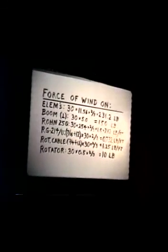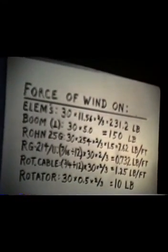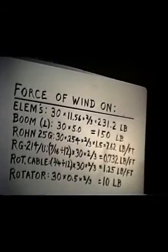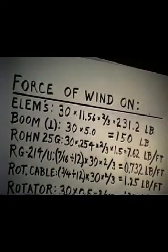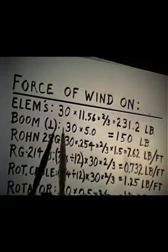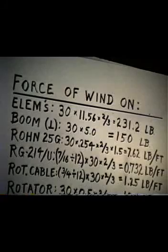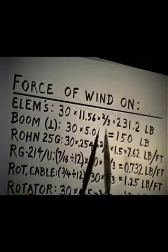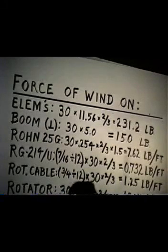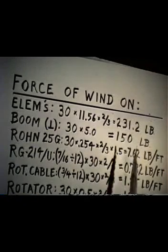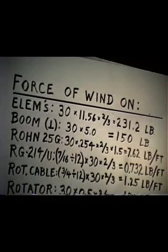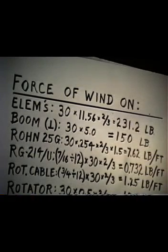Now let's calculate the wind load on this antenna. The wind force perpendicular to the elements is calculated as 30 pounds per square foot times 11.56 square feet of element area times two-thirds — our rounding factor for round cross-sections — giving a wind force of 231.2 pounds. That is what the 30-pounds-per-square-foot wind loading is going to exert on this antenna.